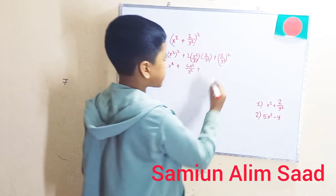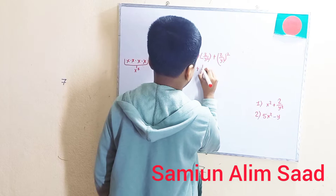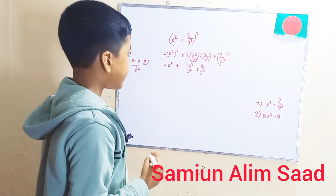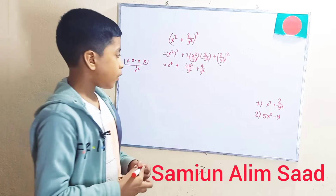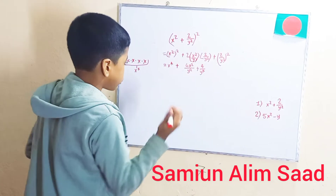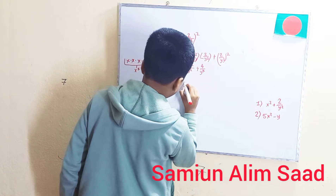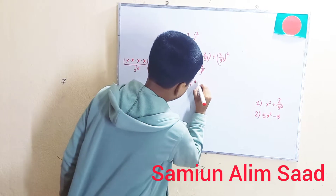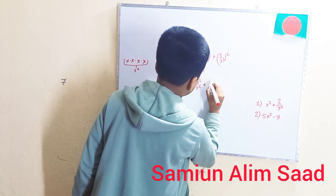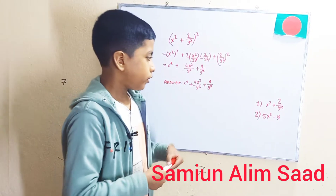What we need to do is distribute the square. y squared squared is already y to the fourth power, and we have 4 on top. So 2 over y squared whole square gives 4 over y to the fourth power. And we are done. The answer is x to the fourth power, plus 4x squared over y squared, plus 4 over y to the fourth power.